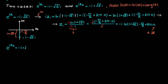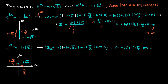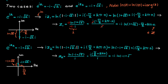Taking the complex logarithm of both sides for the second case, the principal argument for this complex number is pi divided by 2, as seen in the image. The length is minus 1 plus the square root of 2. Dividing both sides by i and simplifying gives c equal to minus i times ln of minus 1 plus the square root of 2, plus pi divided by 2 plus 2pi times n.